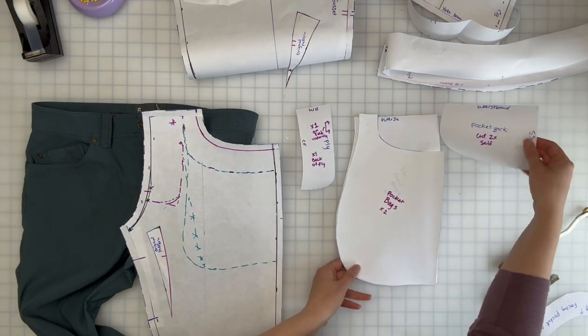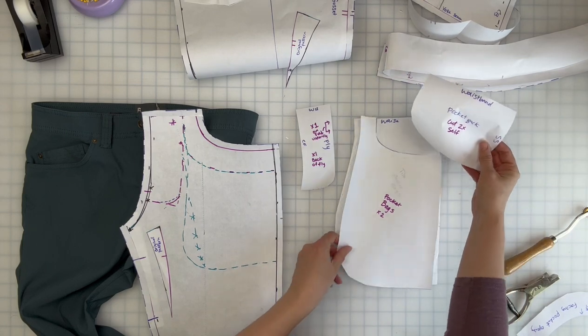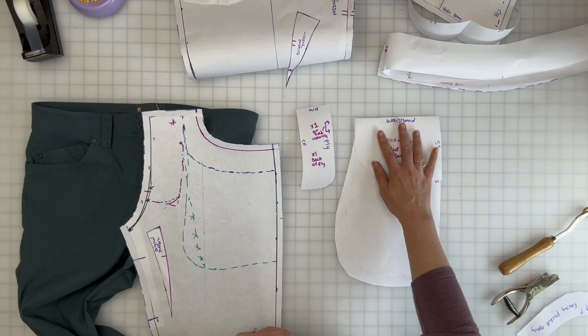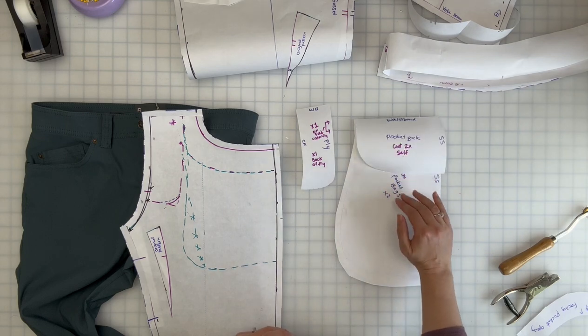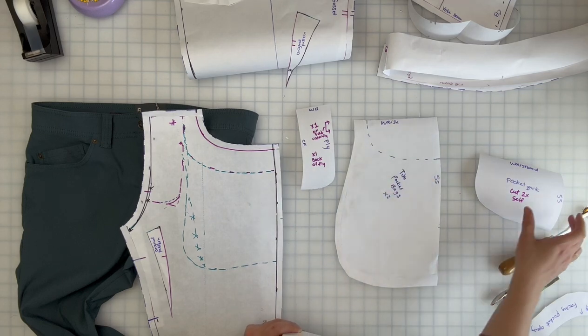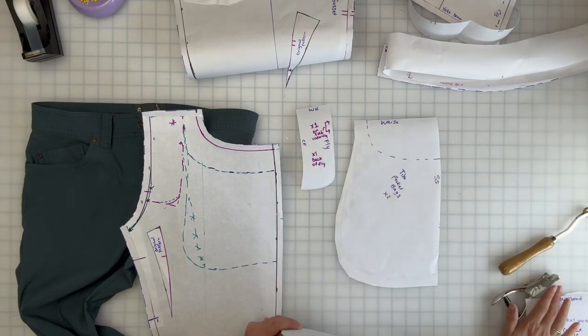Then additionally, I opted out of this pattern piece which generally goes onto the pocket bag, but since I am using the self, which is the main fabric for this piece, I'm just going to do all with the self fabric. So those two are cut out.